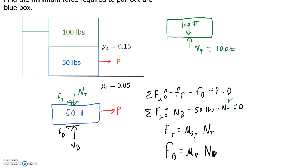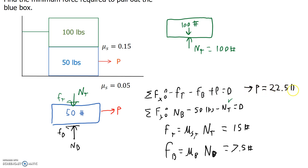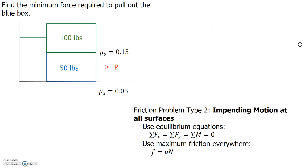Now we have four equations with four unknowns. Plugging in, the friction on the top equals 100 pounds times 0.15, which is 15 pounds. The friction on the bottom is 150 times 0.05, which is 7.5 pounds. The total pulling force is the sum of these two, giving us a pulling force of 22.5 pounds. To summarize: if we have impending motion at all surfaces, we use the equilibrium equations plus maximum friction everywhere — friction equals mu times N. That's the second type of friction problem: an impending motion problem.